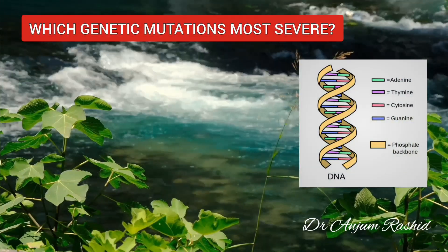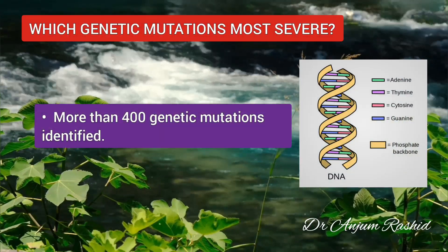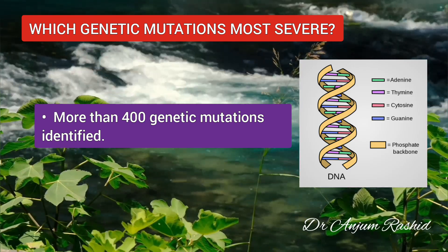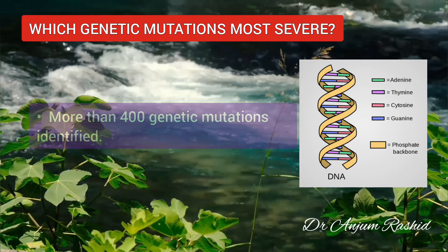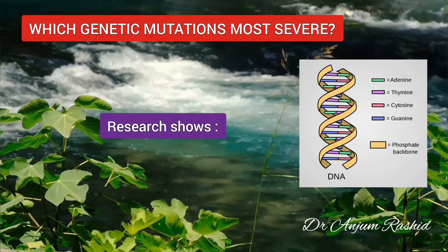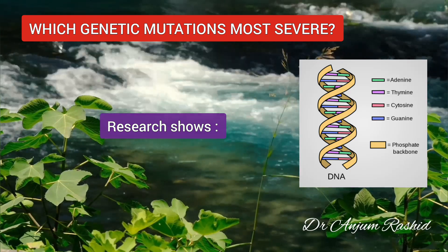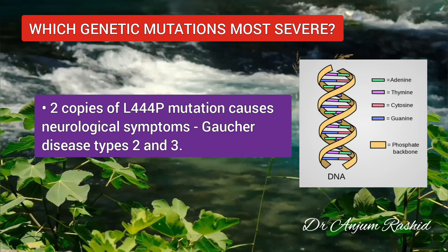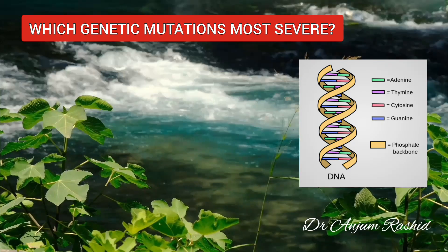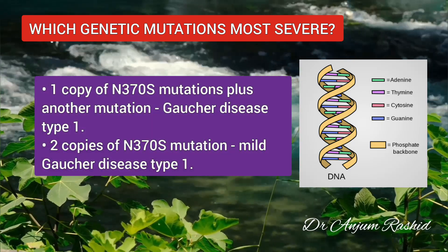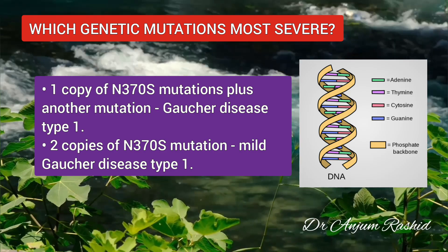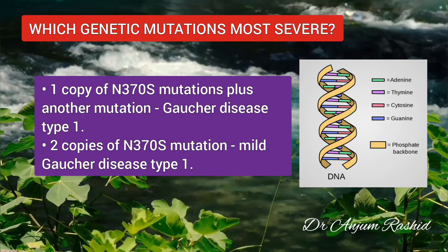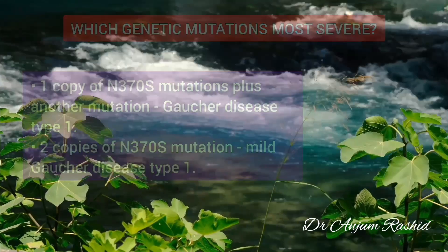Which genetic mutations are most severe? Scientists have identified more than 400 genetic mutations associated with this disease. Certain genetic mutations can cause more severe symptoms, but genetics alone do not determine disease severity. Having 2 copies of the L444P mutation causes neurological symptoms and is related to Gaucher disease type 2 and 3. Patients with 1 copy of the N370S mutation plus another mutation will almost certainly have Gaucher disease type 1, while 2 copies of N370S may result in a milder form.